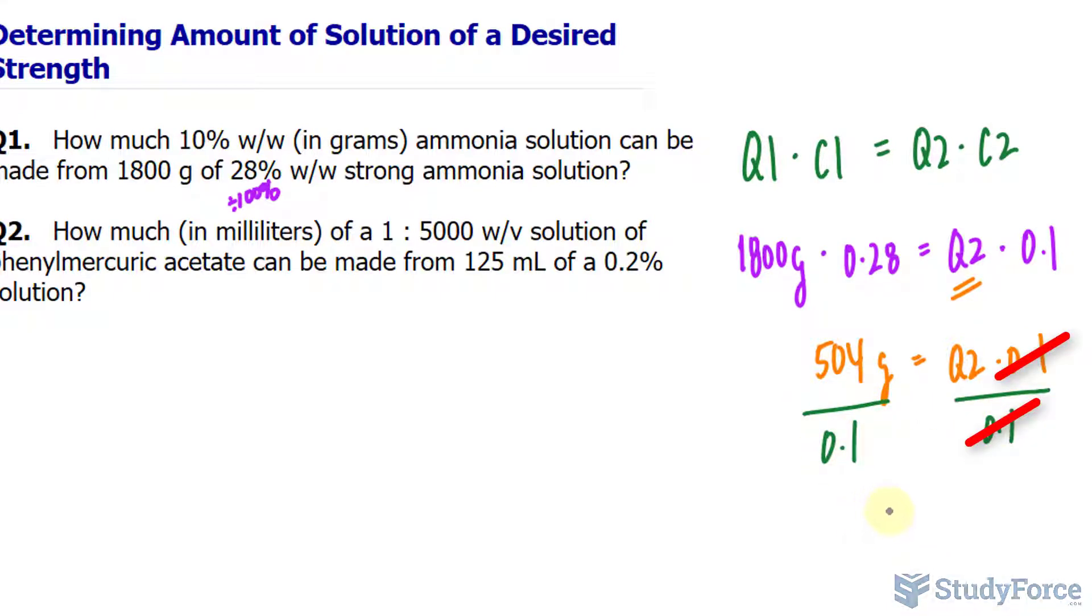And then we end up with a Q2 value. Dividing these two out is 5,040 grams. So starting with a stock solution that is 1,800 grams at 28% strength, we would need a solution that is 5,040 grams to create a strength that's 10%. Another way to approach these problems is by calculating the active ingredient found in this 1,800 grams solution.